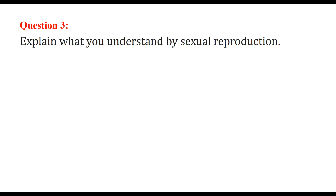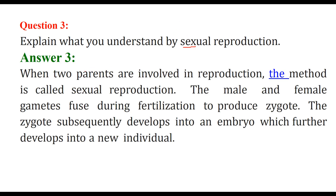Explain sexual reproduction. In sexual reproduction, both the male and female parts are required. When two parents are both involved in reproduction, the method is known as sexual reproduction. The male and female gametes fuse together during fertilization to produce a zygote, which further develops into an embryo and then into a new individual.